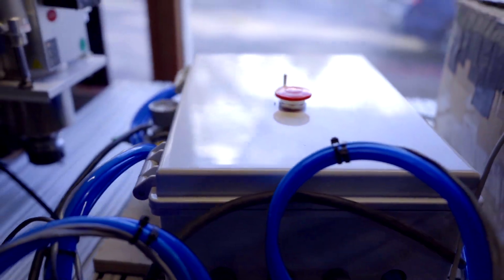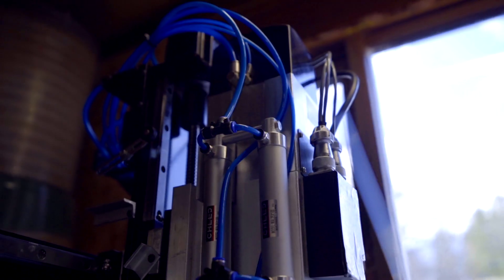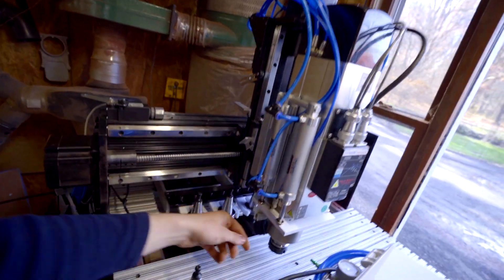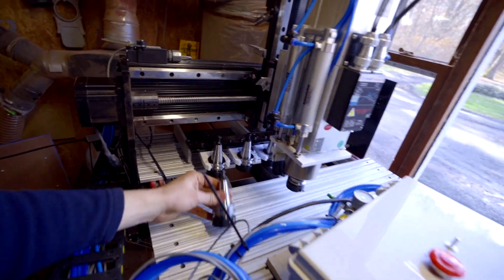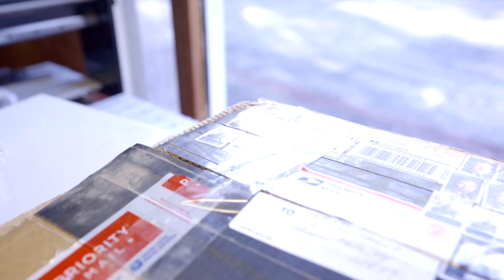But basically what we have here is this pneumatic box. This feeds all the air for this dust shoe and also for the spindle. There's an air seal that picks up the tool and keeps it locked in here. This is for the spindle.